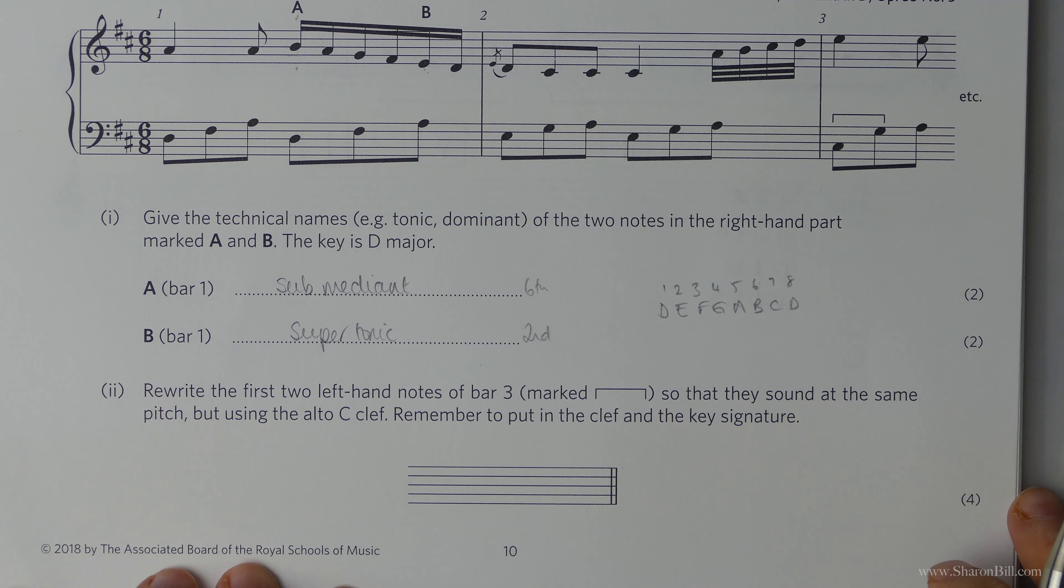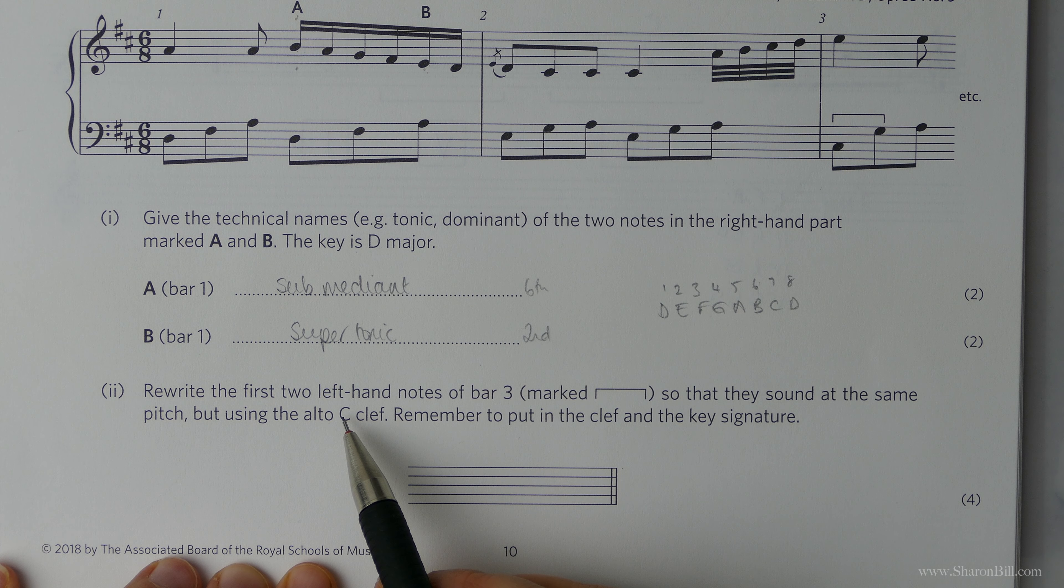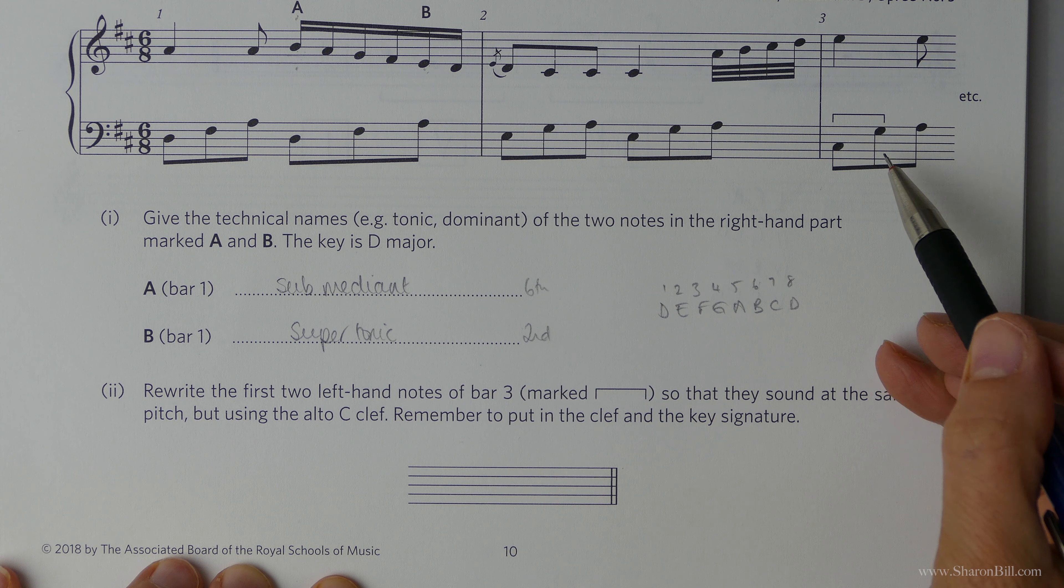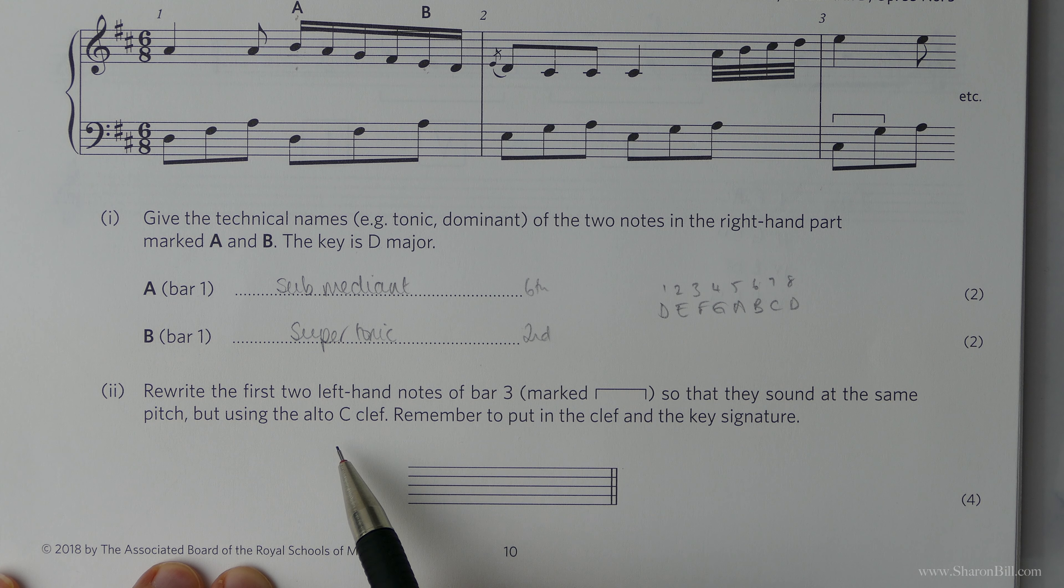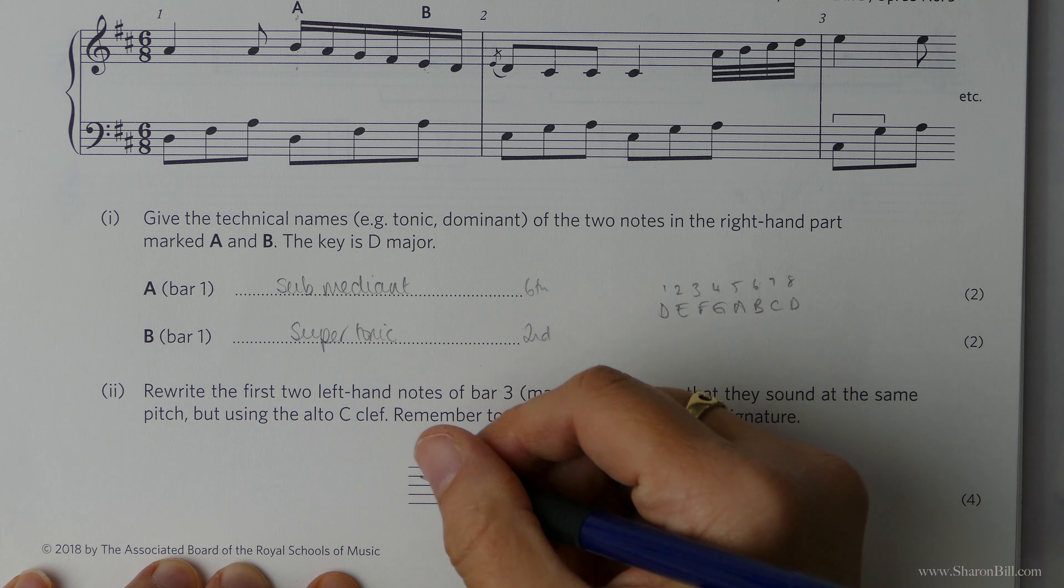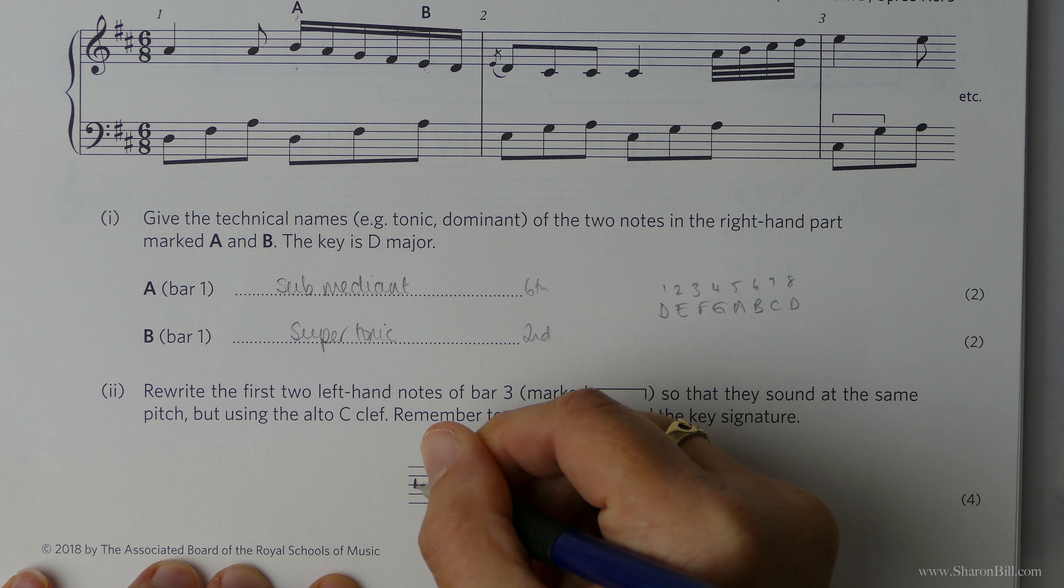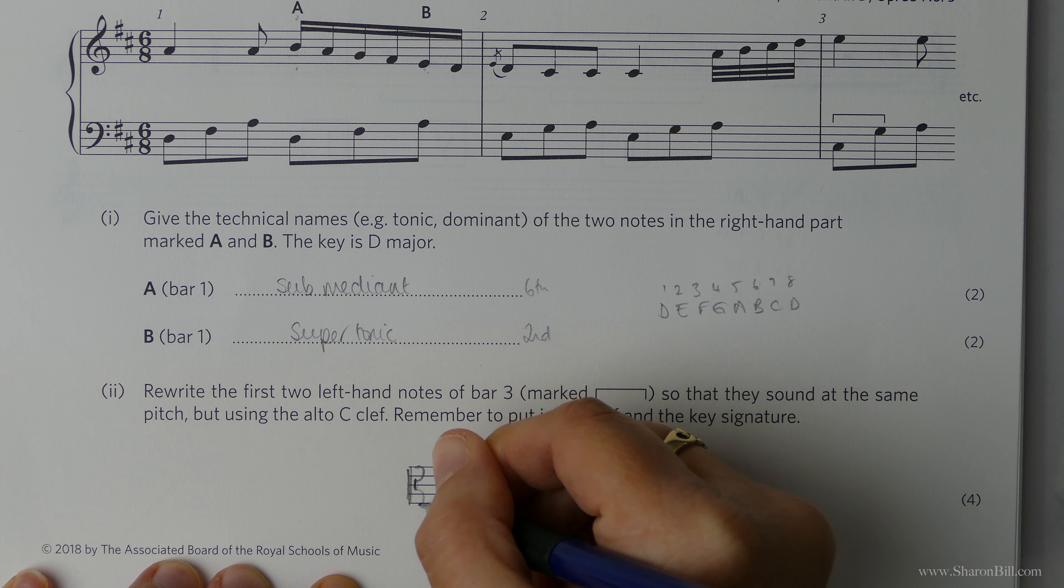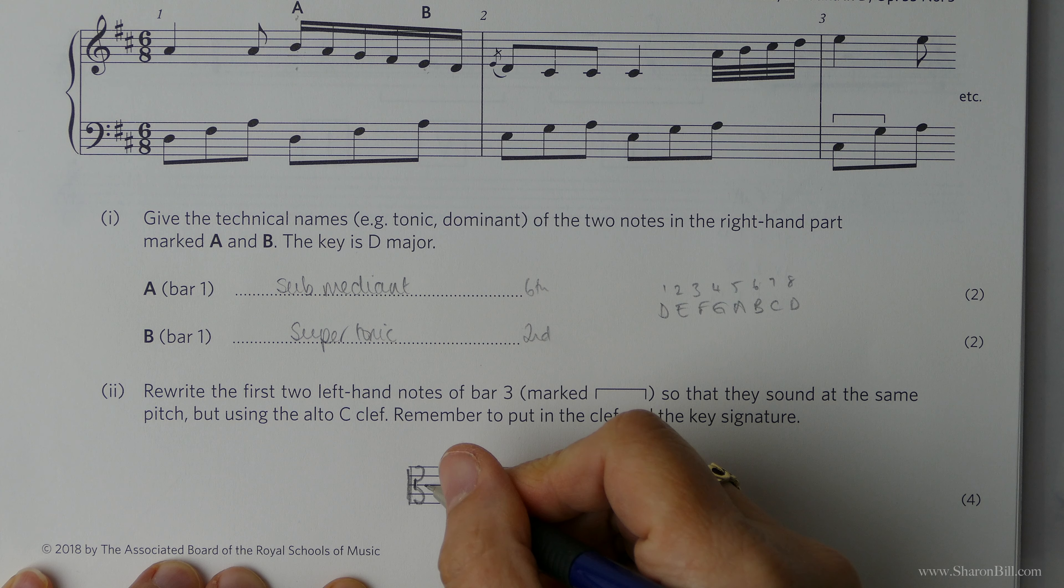And now the last little part of this, we've got to rewrite the first two left hand notes of bar 3, here, marked with a bracket, so that they sound at the same pitch, so be careful you don't jump any octaves, but this time we're swapping to alto clef, so let's get that in place. So alto clef is where middle C is the middle line, so we have a sort of a double bar line, and that's the key signature 2 sharps, C, D, E, F sharps, and C sharps.